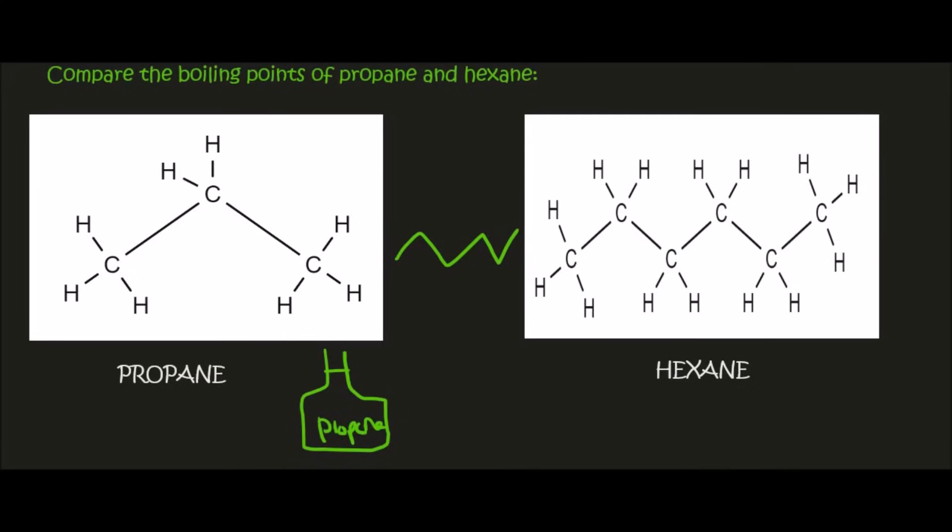In that bottle you're going to have a whole lot of these propane molecules floating around. And then in a different bottle of hexane you would have a whole lot of hexanes floating around. You're not going to have some type of mixture with propane and hexane mixed together.